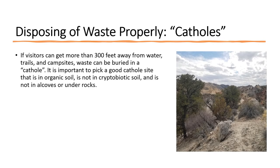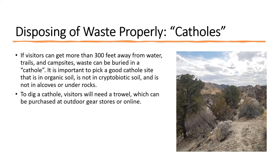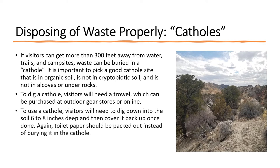If visitors can get more than 300 feet away from water, trails, and campsites, waste can be buried in a cat hole. It is important to pick a good cat hole site that is in organic soil, is not in cryptobiotic soil, and is not in alcoves or under rocks. To dig a cat hole, visitors will need a trowel, which can be purchased at outdoor gear stores or online. Visitors will need to dig down into the soil six to eight inches deep and then cover it back up once done. Toilet paper should be packed out instead of burying it in the cat hole.